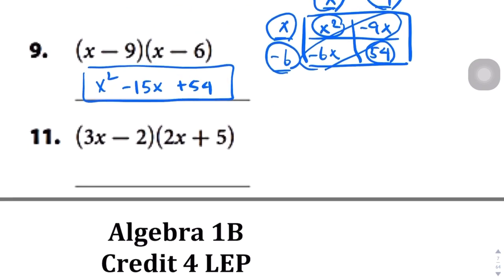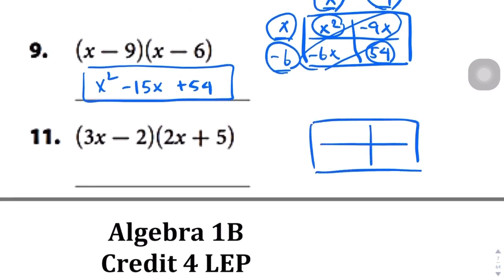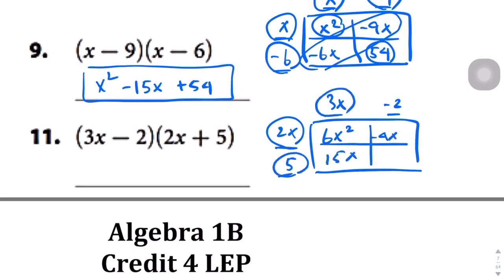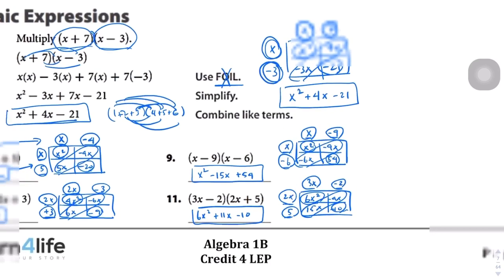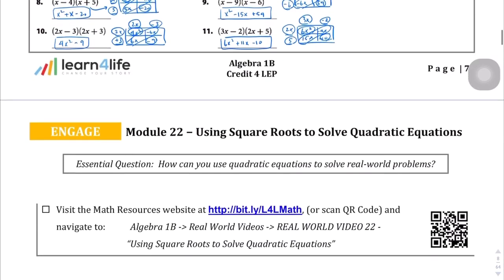Question number 11: we draw the box again. We have 3x minus 2 on top, and 2x plus 5 on the side. 2x times 3x gets us 6x squared, 2x times negative 2 gets us negative 4x, 5 times 3x gets us 15x, and 5 times negative 2 is negative 10. Combining terms: 6x squared, then 15x minus 4x gives us positive 11x, and then negative 10. So 6x squared plus 11x minus 10. That was page seven.